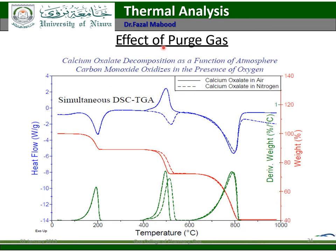Effect of purge gas: the purge gas also affects the shape of the TGA curve. Here you can see calcium oxalate in air versus calcium oxalate in nitrogen — the dotted line uses nitrogen while the solid line uses air as the purge gas. The nature of the purge gas significantly affects the shape of the TGA curve.